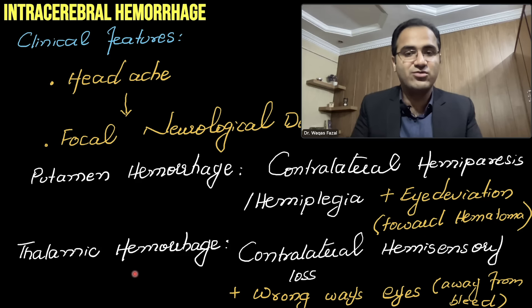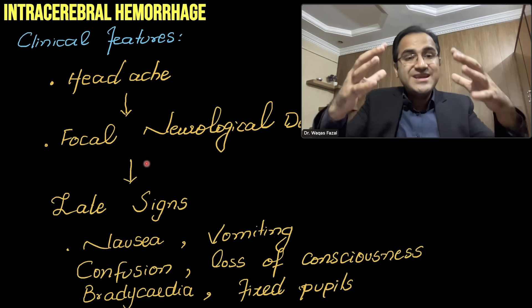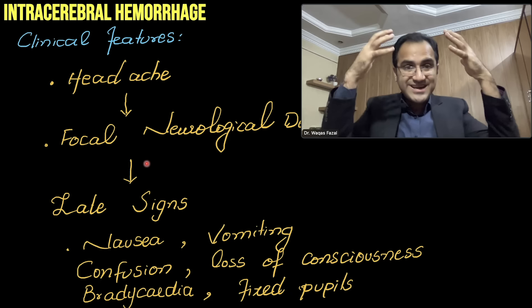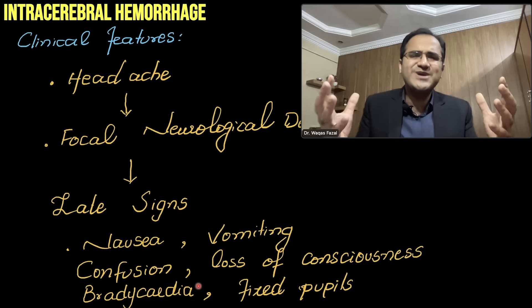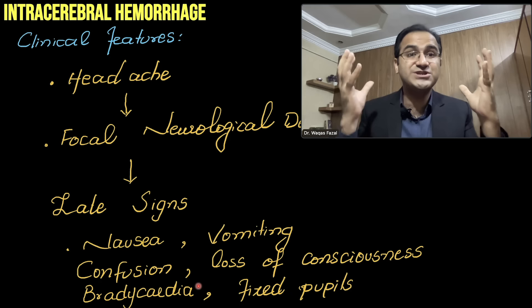Late signs develop as blood accumulates in the brain, causing increased intracranial pressure. This increased ICP results in nausea and vomiting by triggering the chemoreceptor trigger zone, as well as confusion and loss of consciousness. Bradycardia also occurs — whenever there is increased intracranial pressure, Cushing's triad takes place.